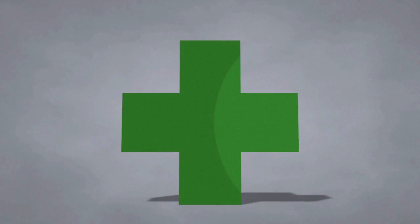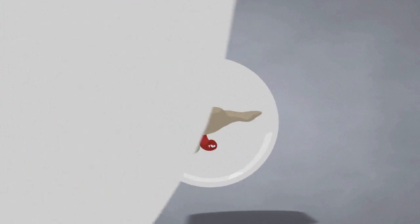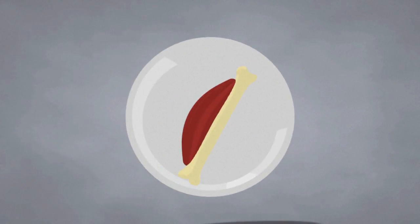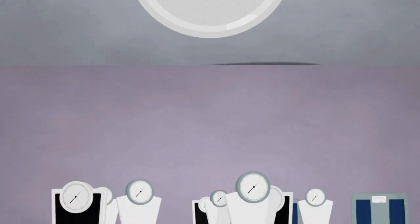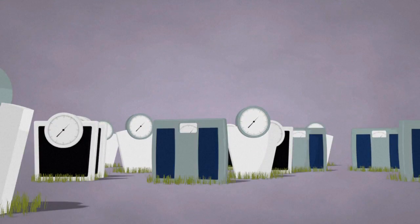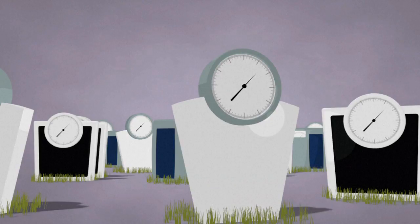The main health problems associated with obesity are cardiovascular diseases, diabetes, musculoskeletal disorders, and some types of cancer. Each year, at least 2.6 million adults die as a result of being overweight or obese, making it the fifth leading risk for global deaths.